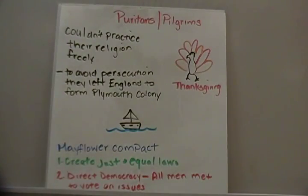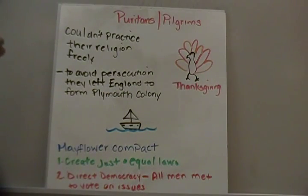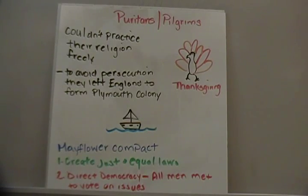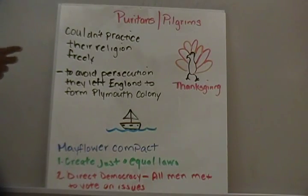Another group of people would later come over to the New World — those who follow the story of Thanksgiving: the Puritans and Pilgrims. Back in England, they were not allowed to practice their religion freely. They didn't go along with what the king wanted. Remember, a king is an authoritarian leader — whatever he says goes. If he says you can't practice your religion, then you cannot, or he may do something to you. So to avoid being persecuted, they said we have to leave England and find our own way. They heard about the New World and decided to go there to practice their religion freely, leaving England to avoid religious persecution.